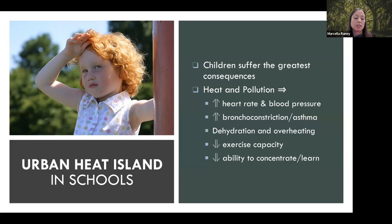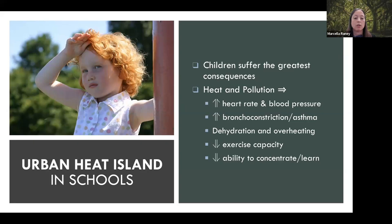Asthma is a powerful risk factor for chronic absenteeism, putting susceptible children at a disadvantage in the classroom. Pre-pubescent girls have lower sweat rates than boys, which is significantly lower than adults. Younger children also generate more body heat due to rapid growth. Children are less likely to perceive increases in body temperature and therefore do not voluntarily take appropriate precautions to avoid overheating. Dehydration and overheating lead to dizziness, nausea, headaches, fatigue, and decreased exercise capacity. When students return to the classroom, they have difficulty concentrating and learning.